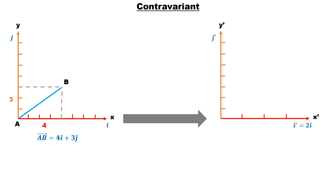Now if we change the coordinate system, what will be the difference on vector AB in the new coordinate system? In the new coordinate system, unit vector i-cap prime is double the unit vector i-cap of the first coordinate, while j-cap prime is the same. There will be no difference on the vector when the coordinate system changes, but the components of the vector will change. Its component is now 2 because the i-cap prime basis is double — because of doubling the basis vector, only half the component is required to specify the vector in comparison to earlier.